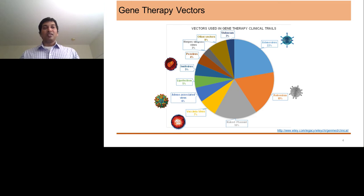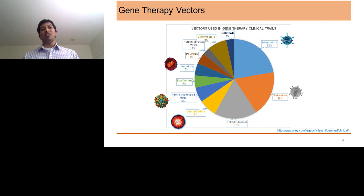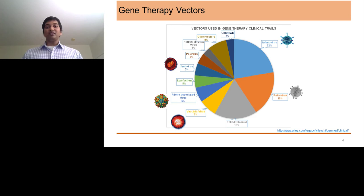Talking about Gene Therapy Vectors — this pie chart, which I designed using data from the Gene Medicine website, shows you a landscape of different viral vectors involved in gene therapy clinical trials. This data is from around four years back, and the landscape has changed a lot. Primarily, looking at the whole pie chart, the first things you can observe is that adenovirus and retroviruses have been playing a critical role in these gene therapy trials.